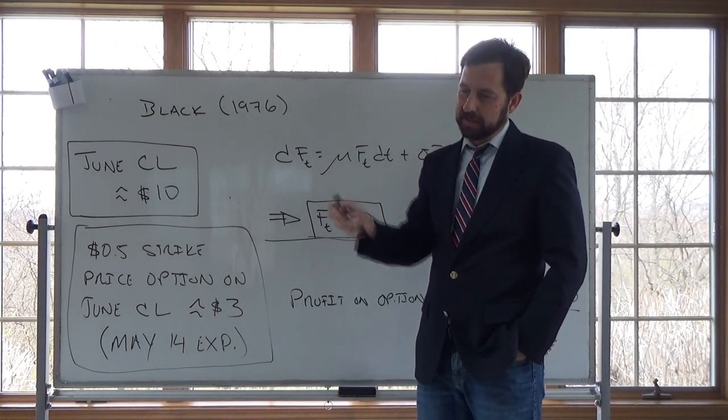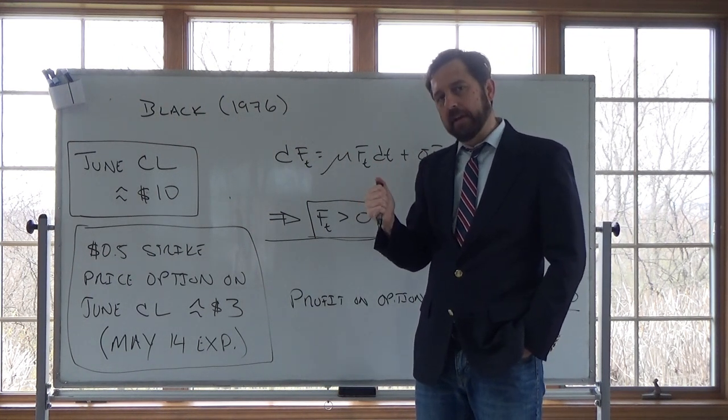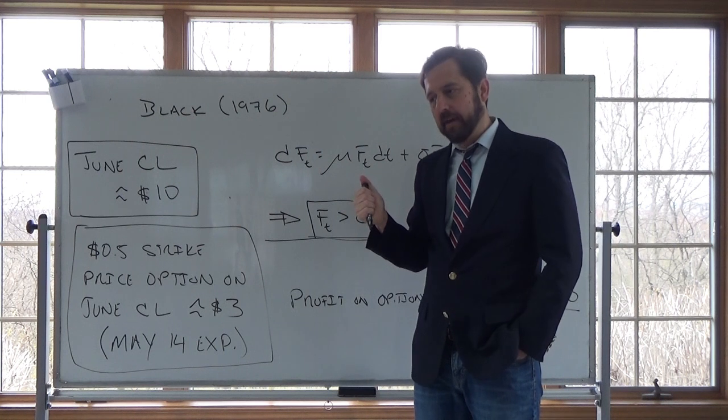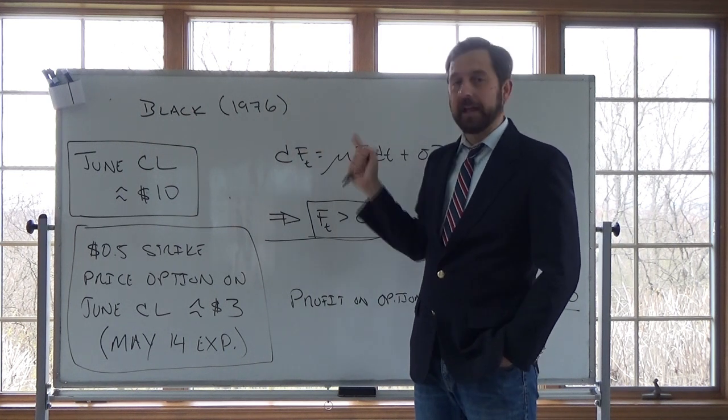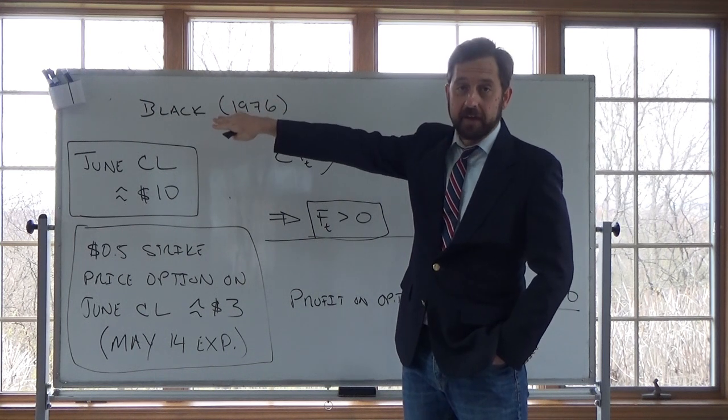And it got me wondering, now if I need Greeks I'll calculate that myself, I don't use the one from my brokerage, but it got me wondering how are they calculating those Greeks? And I bet, I don't know, but I bet that they're using Black 76. So Black 76, this is Fisher Black of the Black-Scholes model.